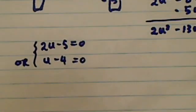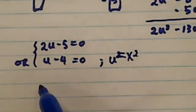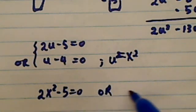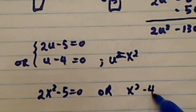Let's substitute back u. Remember that earlier we say u is equal to x squared. So for the first one, I would have 2x squared minus 5 equal to 0, or x squared minus 4 equal to 0.